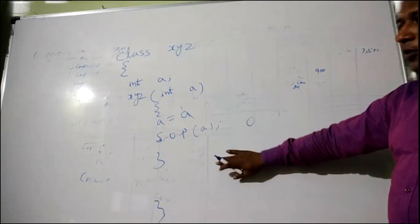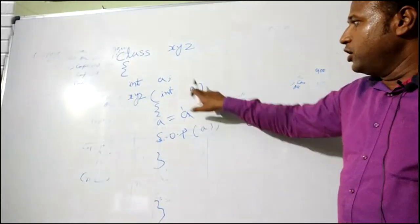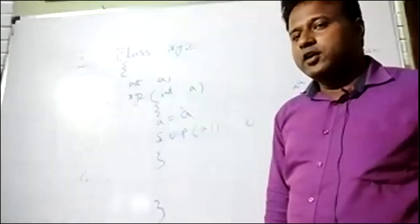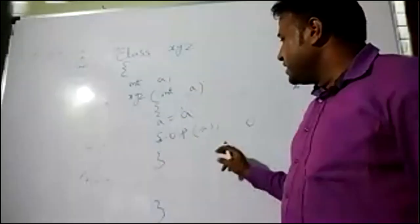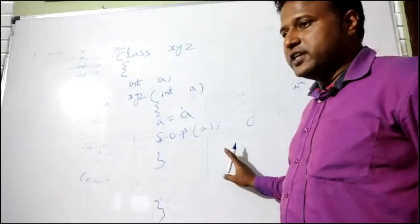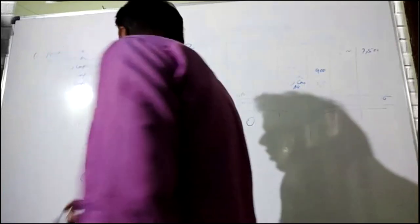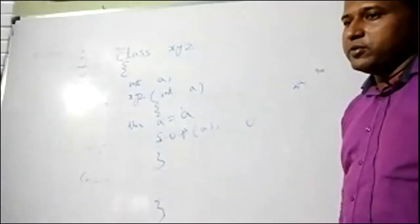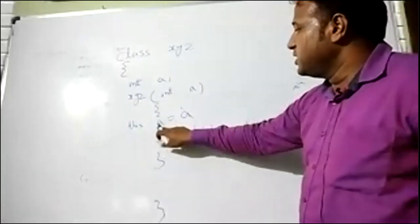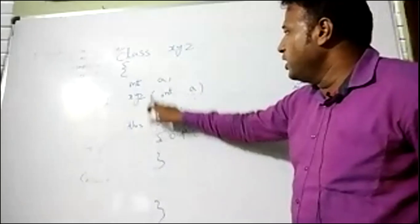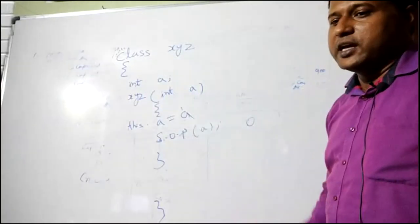That is the problem we have when your parameter variable or member variable name is the same. At that point your compiler gets confused which variable to initialize, so it initializes the default value 0. But now, if you write this keyword — if you write this.a equals to a — this refers to the member variable. So the value of the parameter variable will be used for initialization of the member variable. There will be no confusion.